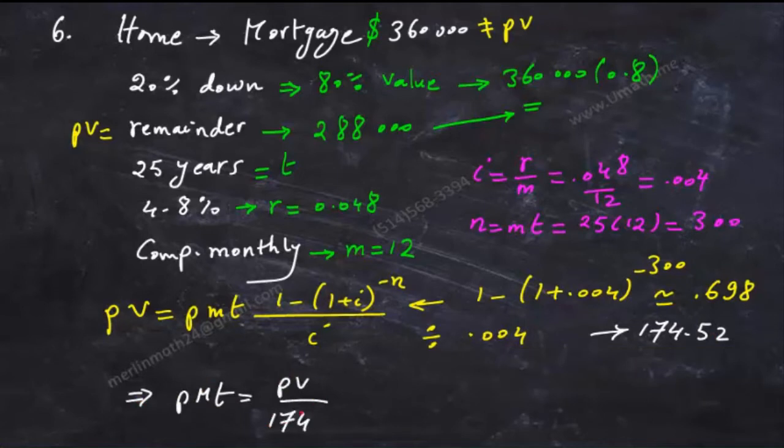n times pmt would be the pv divided by the value on the right side. It would turn out to be approximately $1650.43.